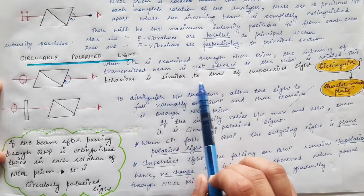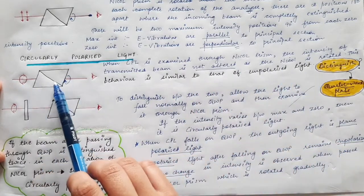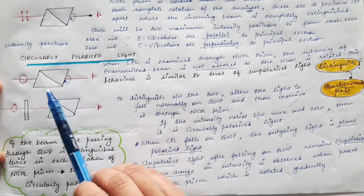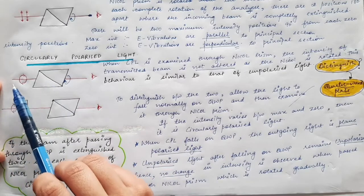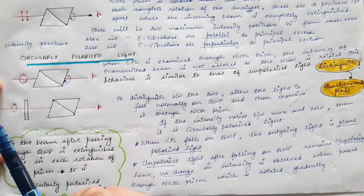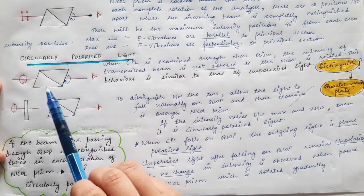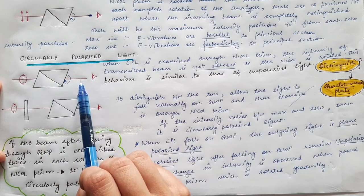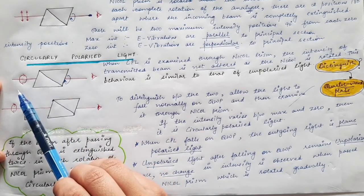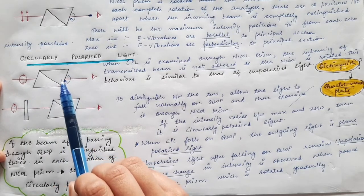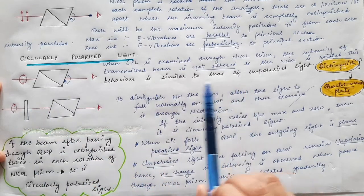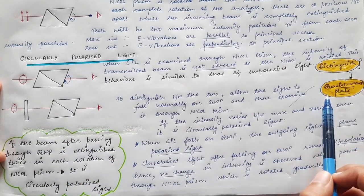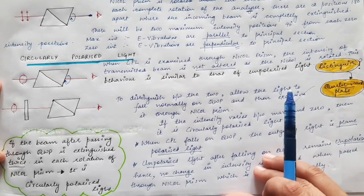This behavior is similar to that of unpolarized light. When unpolarized light falls on a Nicol prism, the intensity of the transmitted light is also not altered as the prism is rotated. So both circularly polarized light and unpolarized light show the same behavior through a Nicol prism. To distinguish between them, we use a quarter wave plate.